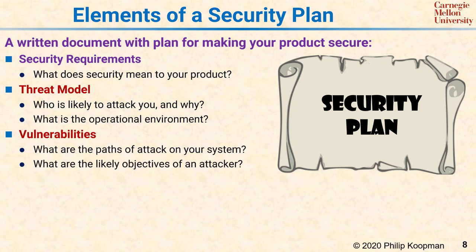Vulnerabilities are the likely paths of attack to your system, including the types of ways an attacker can gain access — whether by a network or by physical access — and the likely objectives of an attacker in terms of their attack strategy and what system behaviors they may wish to elicit.